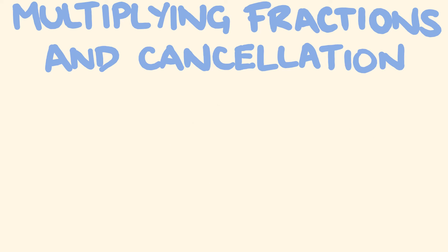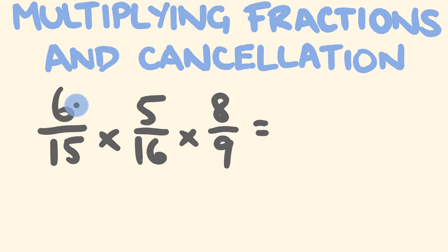Alright what about one last example? A final example where this is much bigger is say 6 over 15 multiplied by 5 over 16 multiplied by 8 over 9. Now if we were just directly multiply this across we'd get some big numbers which would be quite difficult to cancel down and quite take quite a bit of time. It's much faster to simplify as you go. And so let's start off by looking for the obvious factors.